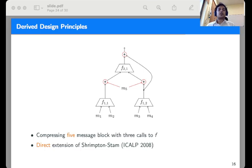Now I'm going to talk about certain corollaries of our result that may not be very apparent. To start with, consider the direct extension of Shrimpton-Stam construction in the 2n to n-bit setting. Here the function compresses five message blocks with three calls to the function f. This construction in particular has a simpler collision resistance argument.